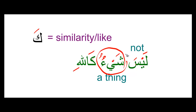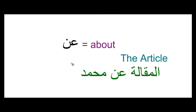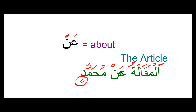Next we have an, which means 'about.' For example, al-maqalatu an muhammadin. The two kasras are there because we have the word an before muhammad. Al-maqala means an article, like a newspaper article. So al-maqalatu an muhammadin: the article is about Muhammad, it is regarding Muhammad.